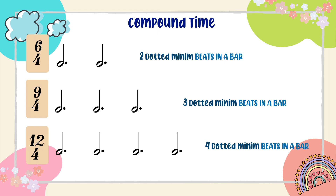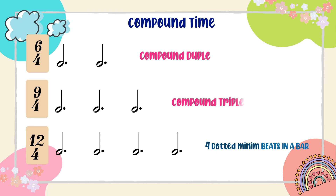Now, these dotted minims are the main beats in the bar. Therefore, 6/4 is compound duple time, 9/4 is compound triple, and 12/4 would be compound quadruple.